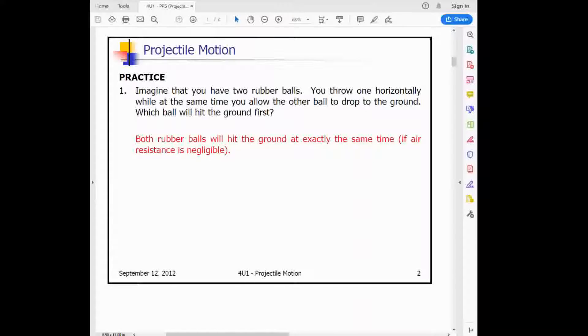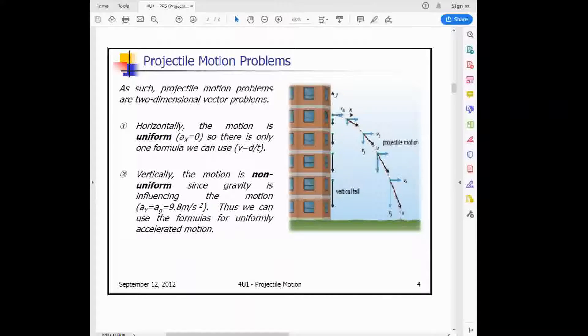With projectile motion, one interesting thing is that the fall of an object vertically is independent of its horizontal velocity. If we had two rubber balls and threw one horizontally and dropped another at the same time, they would both hit the ground at the same time. The additional horizontal velocity of the thrown ball has no effect on its vertical acceleration towards the ground. I have a short video to show you on that. As you can see, that vertical motion is independent of the initial horizontal velocity vector.